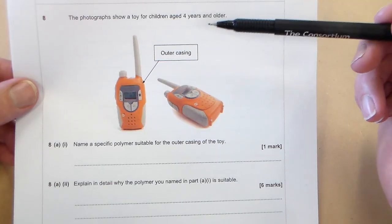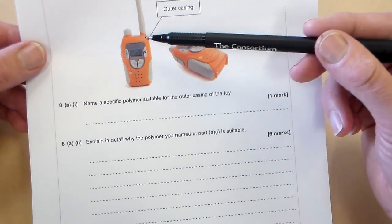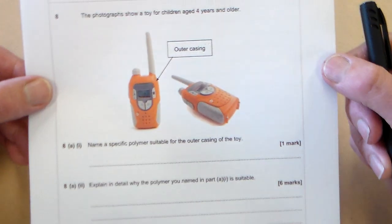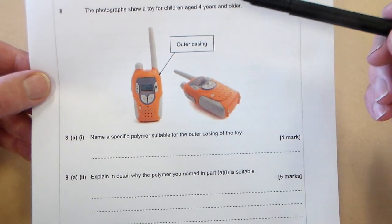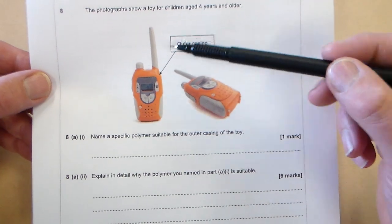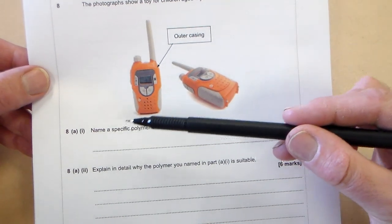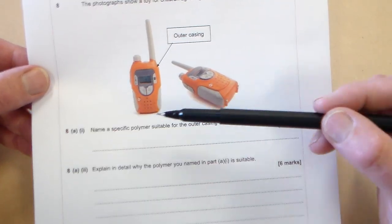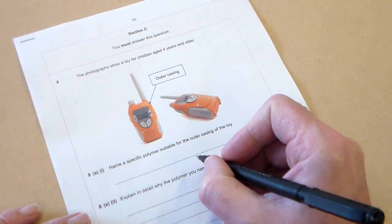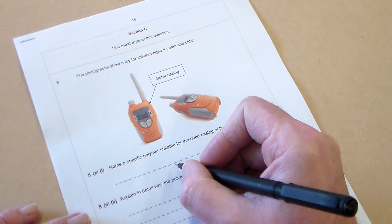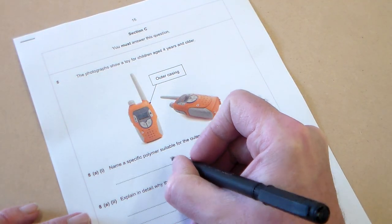The photographs show a toy for children aged four years and older. It's a walkie-talkie kind of toy and it just highlights the outer casing. Question 8A(i): Name a specific polymer suitable for the outer casing of the toy. Well I would think the best one there would be ABS.